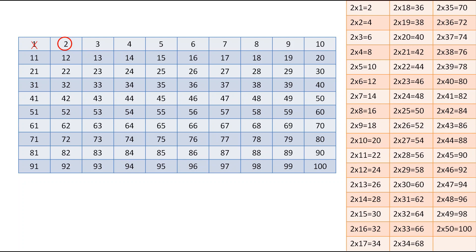We scratch all numbers present in the table of 2: 4, 6, 8, 10, 12, 14, 16, 18, 20, 22, 24, 26, 28, 30, 32, 34, 36, 38, 40, 42, 44, 46, 48, 50, 52, 54, 56, 58, 60, 62, 64, 66, 68, 70, 72, 74, 76, 78, 80, 82, 84, 86, 88, 90, 92, 94, 96, 98, and 100. All these even numbers are present in the table of 2, so I scratched them.